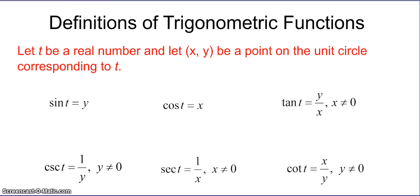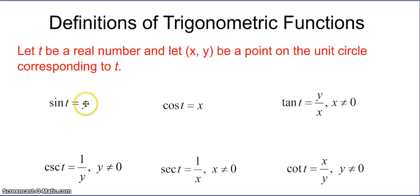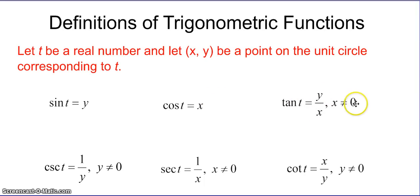Now let's look at definitions of trigonometric functions. If we let t be a real number and let (x, y) be a point on the unit circle corresponding to t — so in this case t is our angle — then sine of t equals y, cosine of t equals x, and tangent of t is y over x. Note that x cannot equal 0, otherwise tangent is undefined.